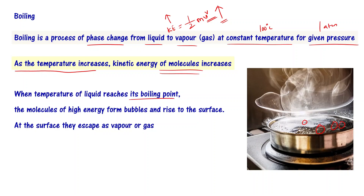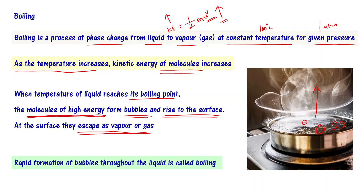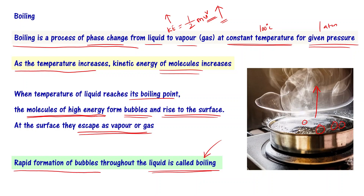When the temperature of the liquid reaches its boiling point, the molecules of high energy form bubbles and rise to the surface. At the surface, the bubbles break and these molecules escape as vapor or gas — they have a lot of kinetic energy. Rapid formation of bubbles throughout the liquid is called boiling. The formal definition: boiling is a process of phase change from liquid to vapor at constant temperature.